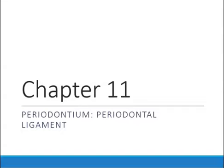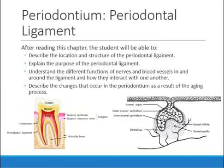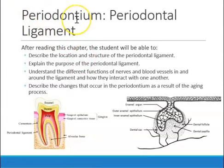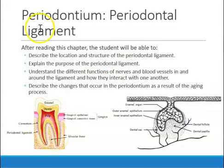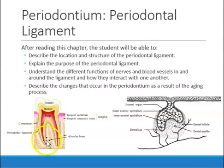Let's do a quick recap on the periodontal ligament. The periodontal ligament is part of the periodontium. 'Peri' means around and 'odont' means tooth, so the periodontium refers to the structures around the tooth. The periodontal ligament fibers are lines of fibers that go all around the root, attaching to the bone on one side and the cementum on the other side.